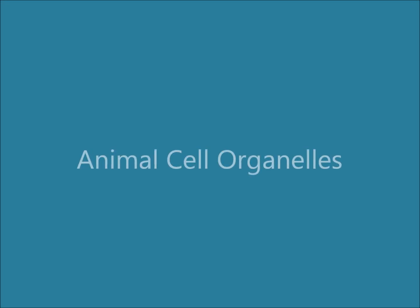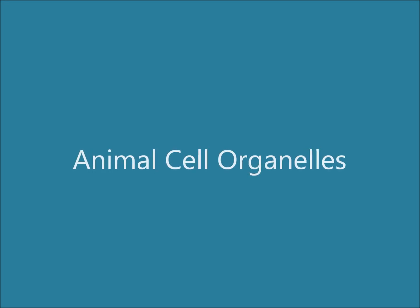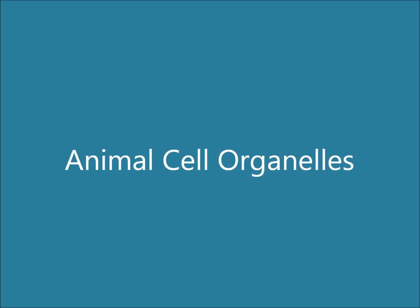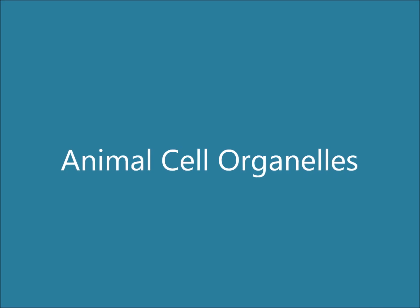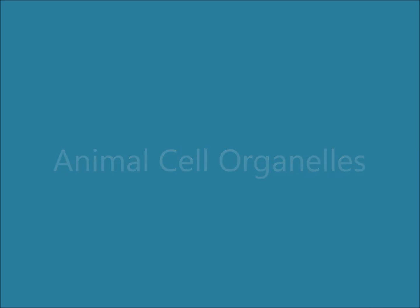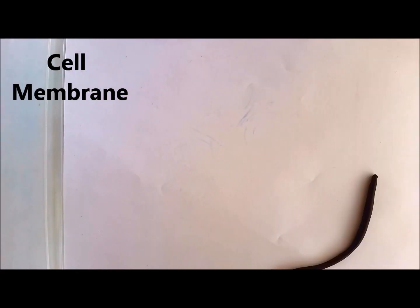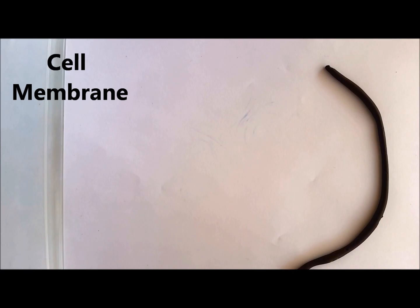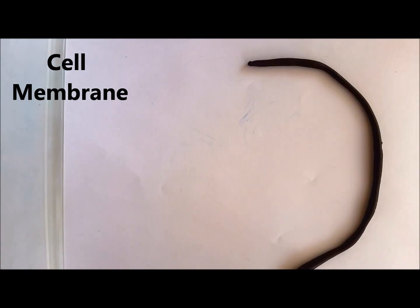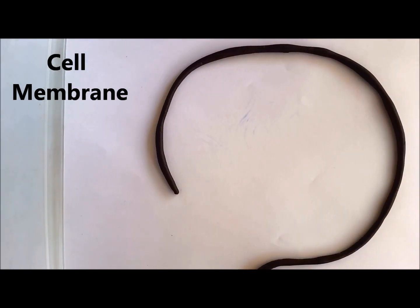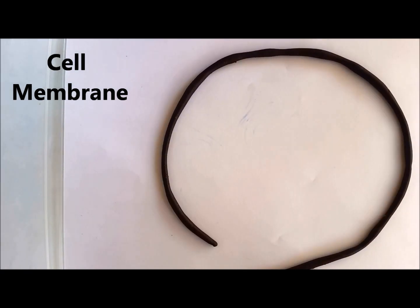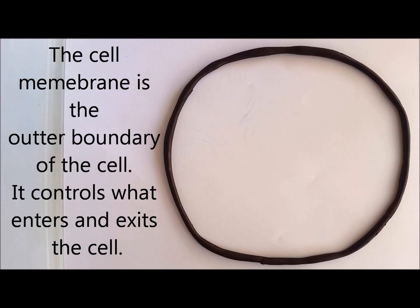Today we've been looking at cell organelles and now we can look at them in a little bit more detail, starting with the animal cell organelles. Let's begin with the cell membrane, which is a thin, flexible barrier surrounding the outside of the cell. It separates the outside world from the inside of the cell and controls what can and cannot enter or exit the cell.